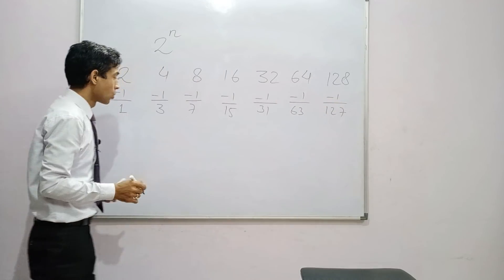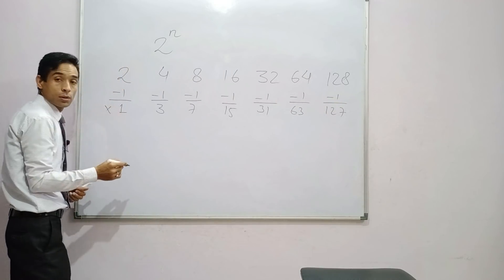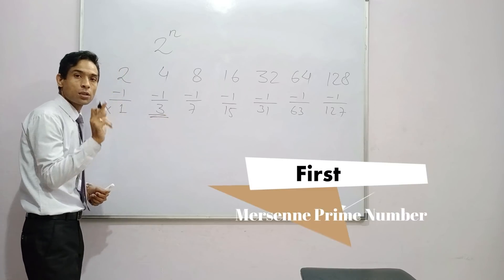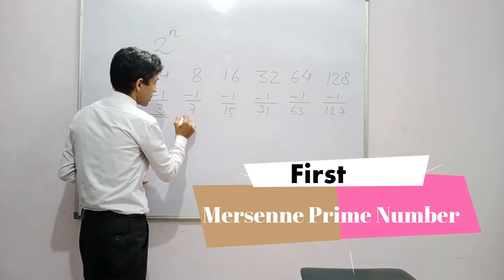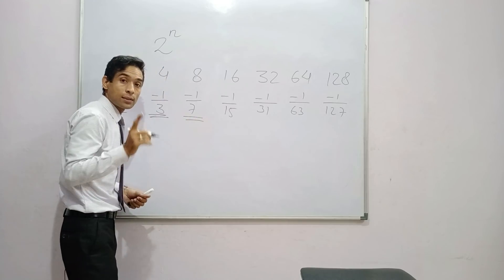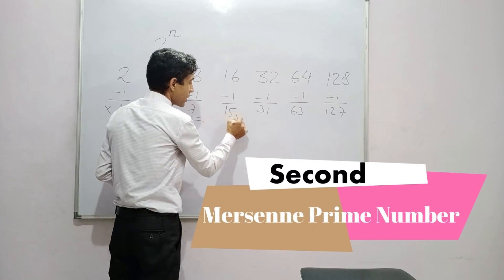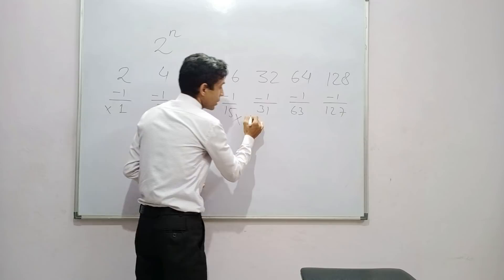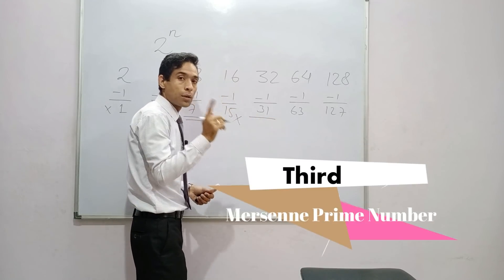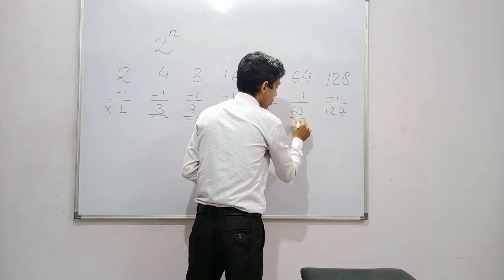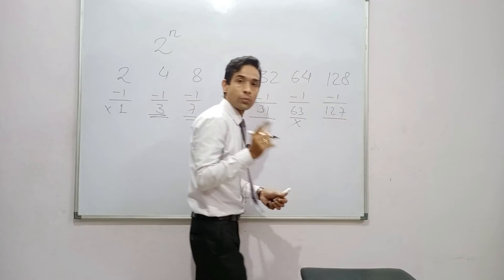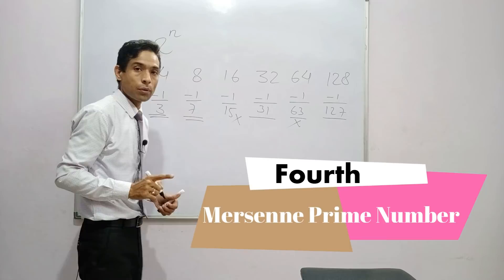Now we know 1 is not a prime number. 3 is a prime number and this is the first Mersenne prime number. 7 is the second Mersenne prime number. 15 is not a prime number. 31 is the third Mersenne prime number. 63 is not a prime number and 127 is the fourth Mersenne prime number.